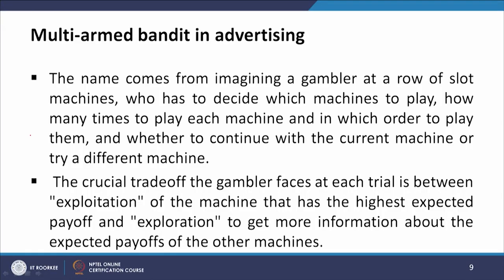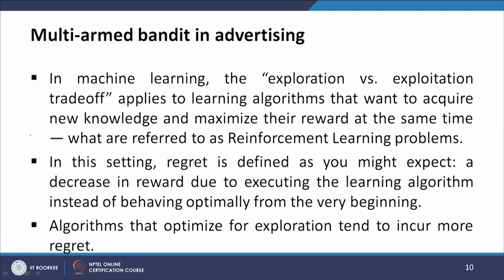The name comes from imagining a gambler at a row of slot machines who has to decide which machines to play, how many times to play each machine, in which order to play them, and whether to continue with the current machine or try a different one. The crucial tradeoff the gambler faces at each trial is between exploitation of the machine with the highest expected payoff and exploration to get more information about the expected payoff of the other machines. In machine learning, this exploration versus exploitation tradeoff applies to learning algorithms that want to acquire new knowledge and maximize their rewards at the same time.